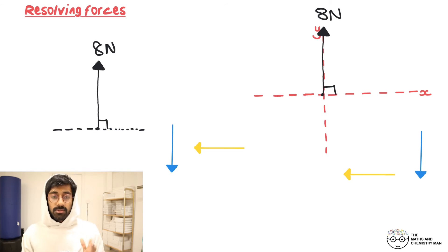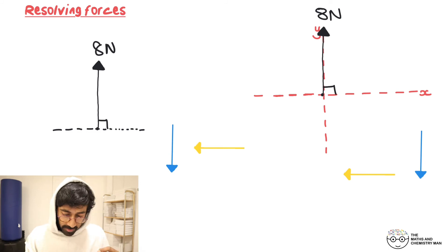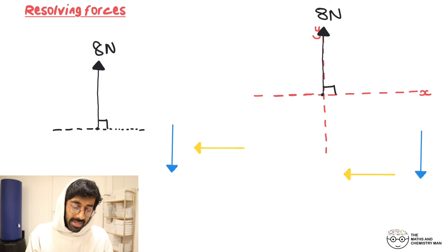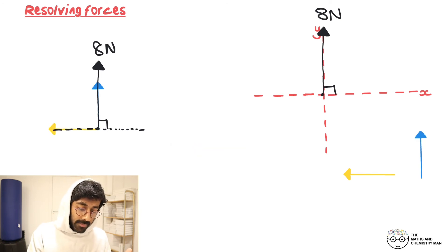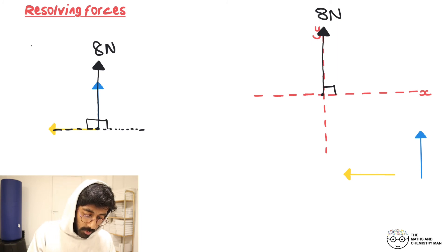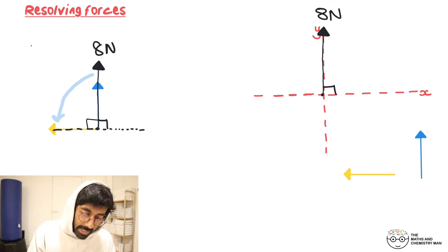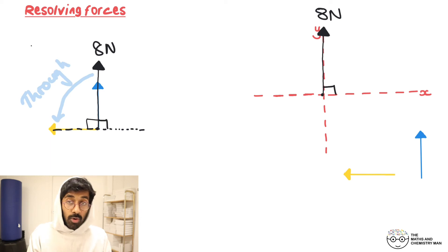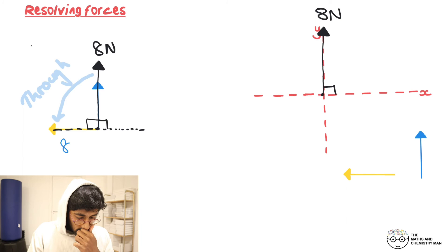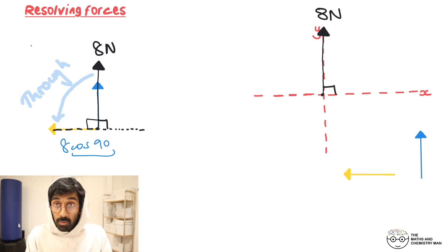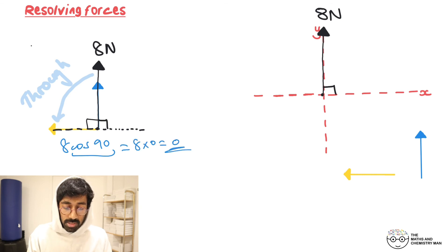Now this force of 8 newtons is already acting vertically — there's nothing acting in the horizontal direction. We can confirm this: the angle to the horizontal is 90 degrees. Taking it through 90 degrees — through means cos — so we do 8 cos 90, and cos 90 = 0, giving 0. That confirms there is no horizontal component.